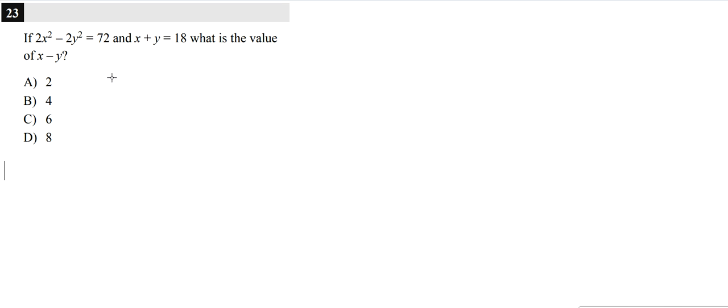So first thing you can do is factor out a 2, and when you factor out the 2, what you have left is x squared minus y squared close parentheses is equal to 72.